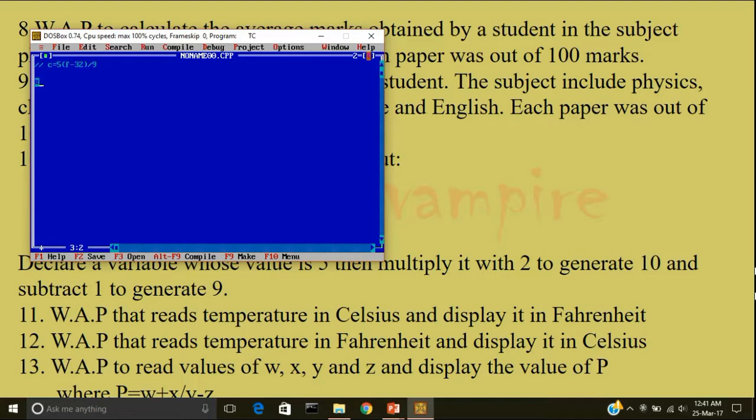First step is to include the header file. Hash include iostream.h. Hash include conio.h. We'll write void main. Open the curly brace. Clear screen. Float C, F.